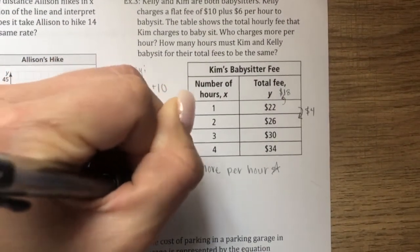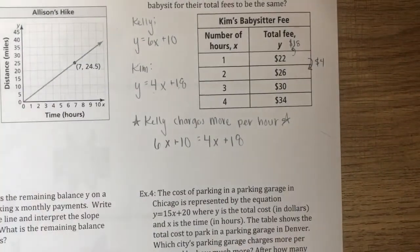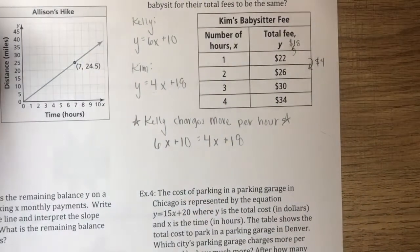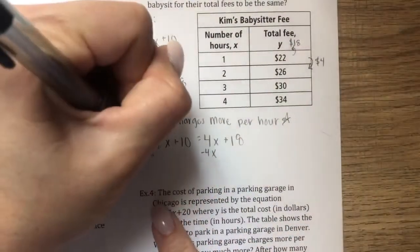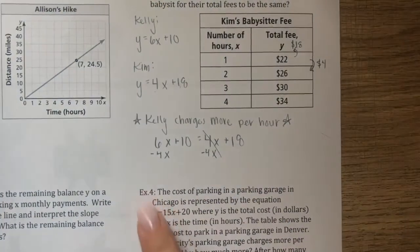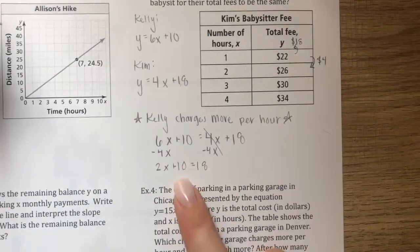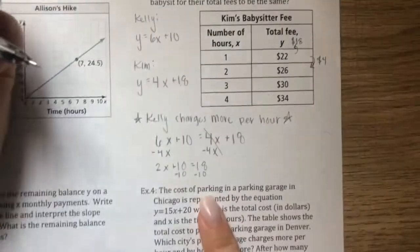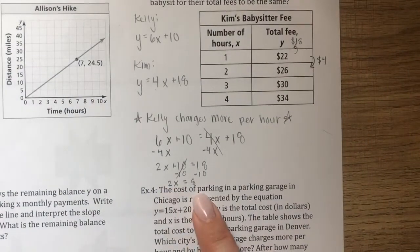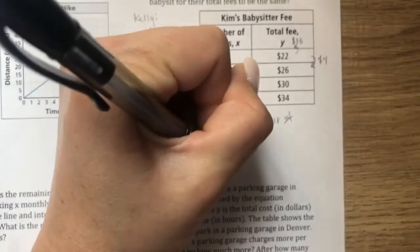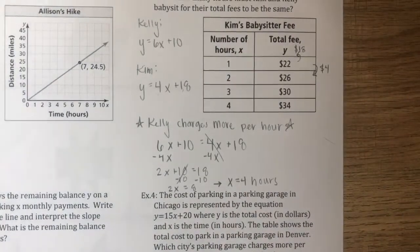So 6x plus 10 equals 4x plus 18. Subtract 4x from both sides: 2x plus 10 equals 18. Subtract 10 from both sides: 2x equals 8. Divide by 2: x equals 4. So at 4 hours they make the same amount of money.